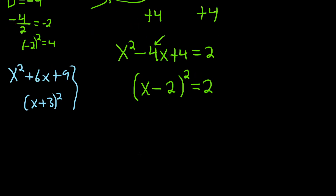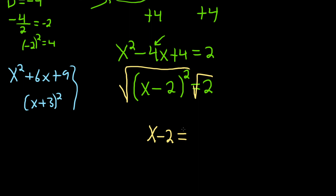Now we have to get rid of this 2. We can take the square root of both sides. When you do that, you use what's called the square root property. On the left-hand side, the squared term goes away, and on the right-hand side we always get a plus or minus — so plus or minus the square root of 2.